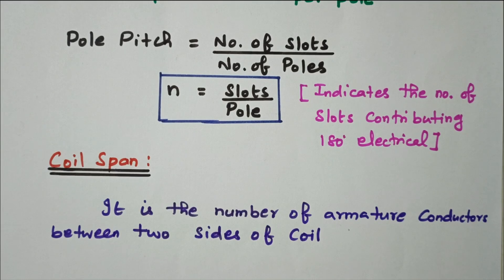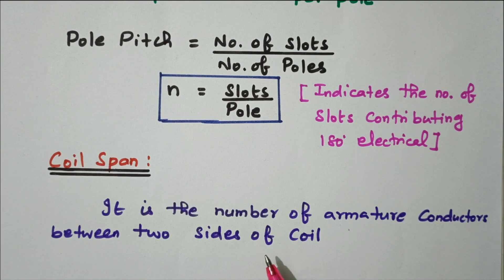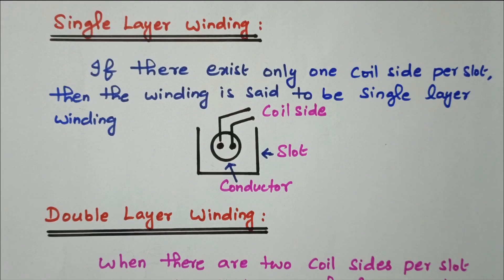Now we'll see the coil span. It is the number of armature conductors between the two sides of the coil. Now we'll go to the types of winding, starting with single layer winding and double layer winding.